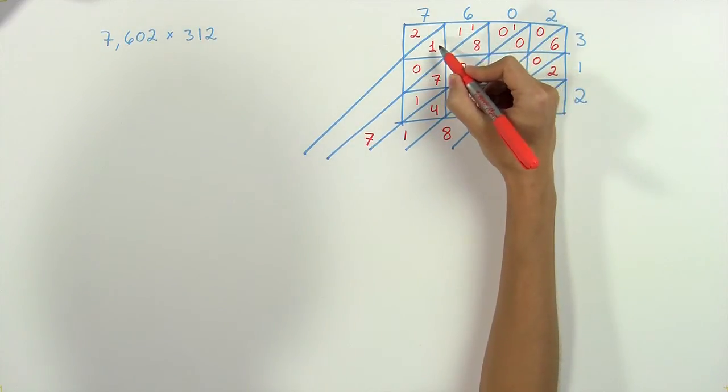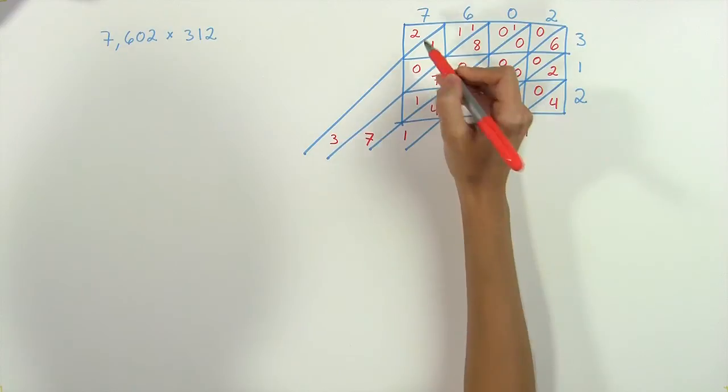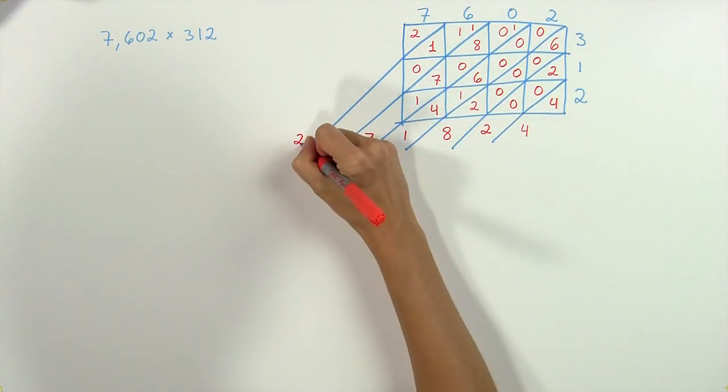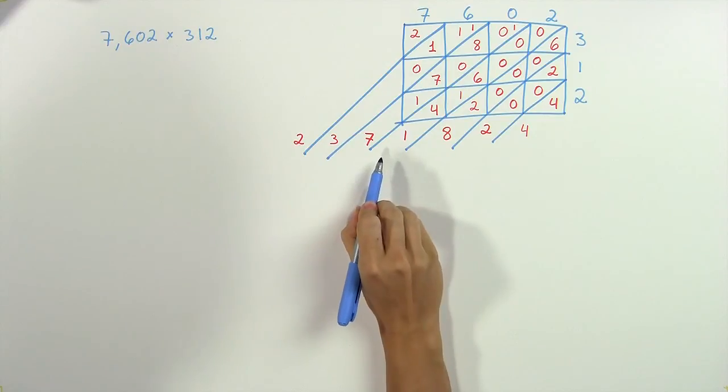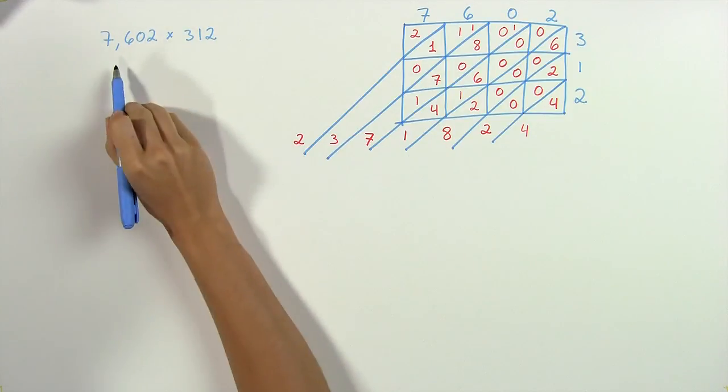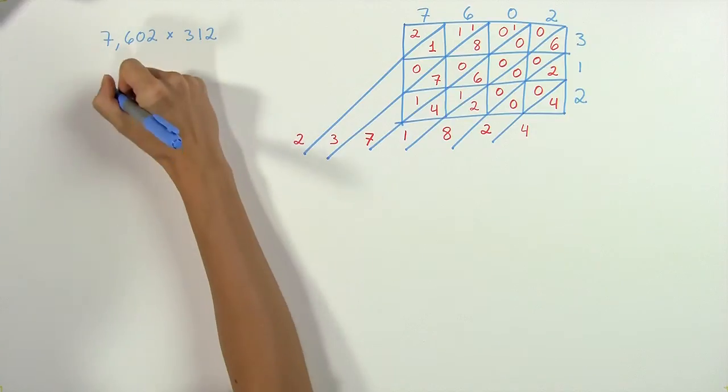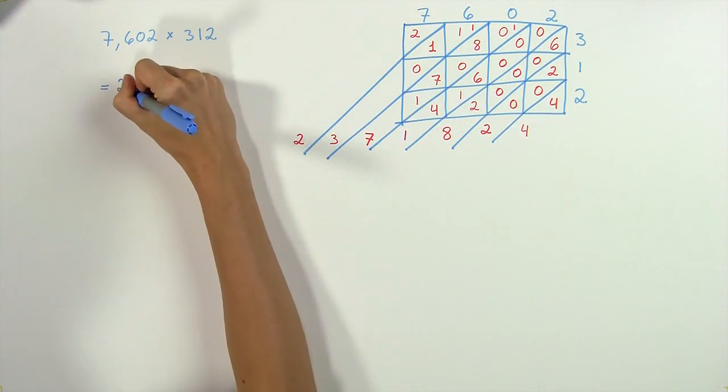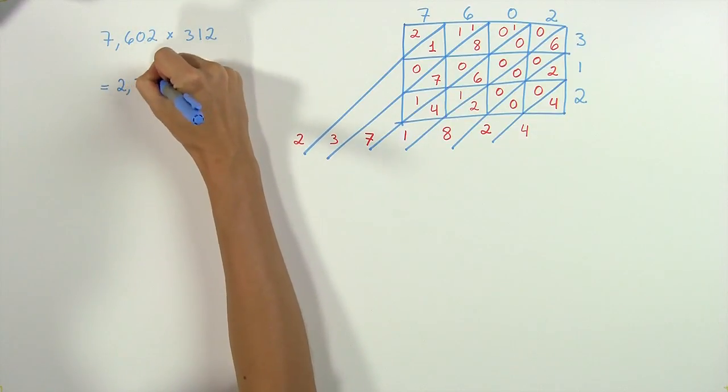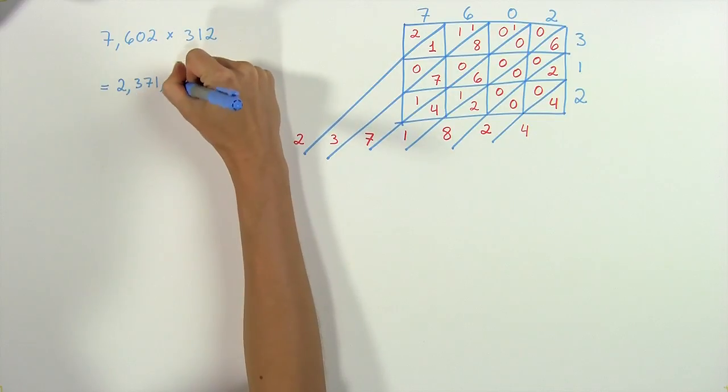Next we have one, two, three, and our last line is just a two. And this string of numbers is actually our final answer. So, seven thousand, six hundred and two times three hundred and twelve is equal to two million, three hundred and seventy one thousand, eight hundred and twenty-four.